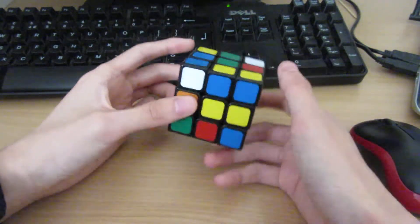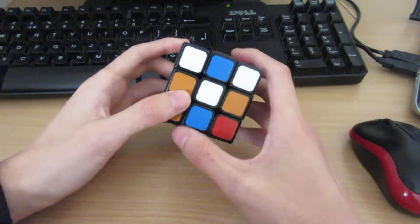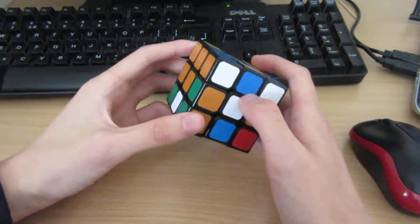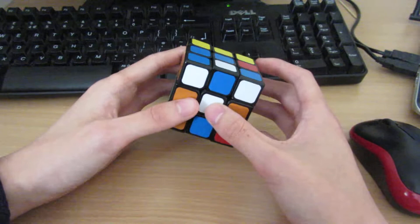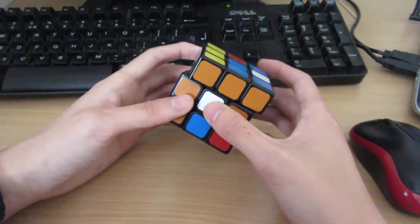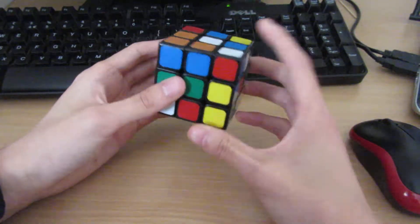Okay, second scramble. So what I see is I can first of all make this block, that this pair, and doing it that way preserves the other pairs. Then I would insert that pair while preserving this one and insert this one.